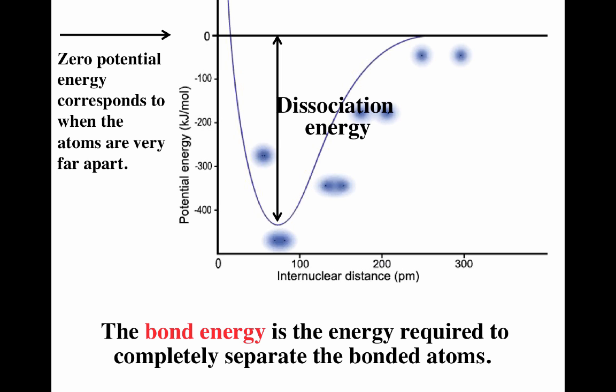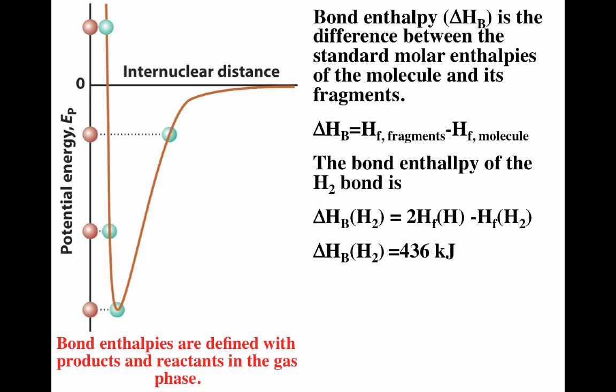Bond enthalpy is a little different from bond energy. Bond enthalpy is the enthalpy of the fragments minus the enthalpy of the molecule. So if we're looking at breaking the hydrogen-hydrogen bond, it's two times the enthalpy of formation of hydrogen atoms minus the enthalpy of formation of the hydrogen molecule, which turns out to be 436 kilojoules per mole.